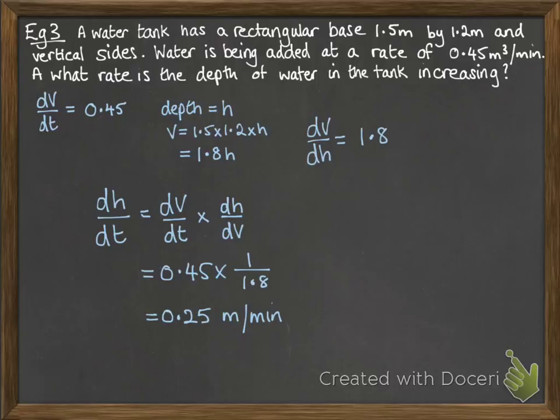Now this is an example of one of those questions where we didn't need to do it at a particular point, because the rate was constant. Once we got that dv by dh, it was 1.8, just a number by itself, so we didn't need to substitute in a value to calculate it at.